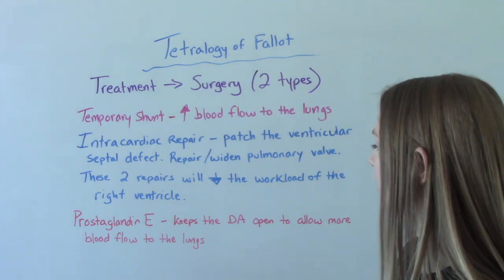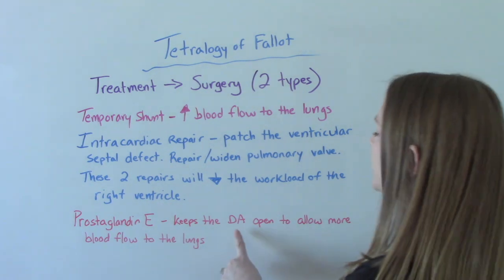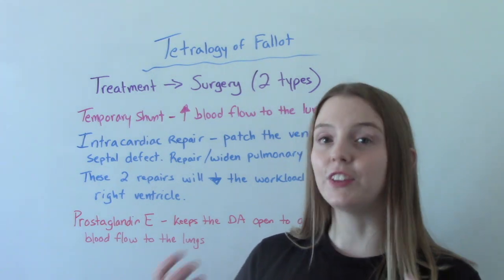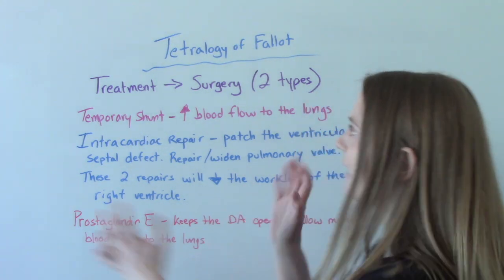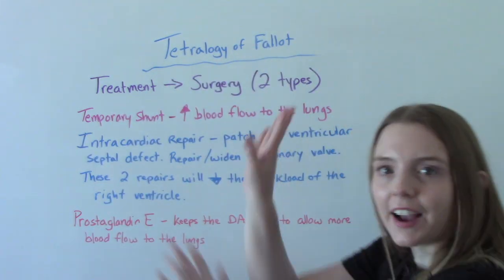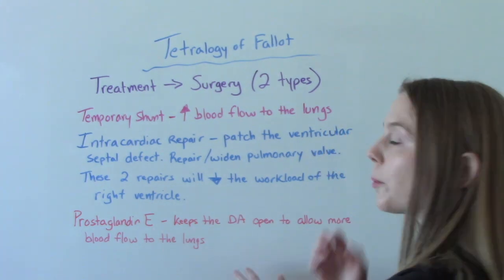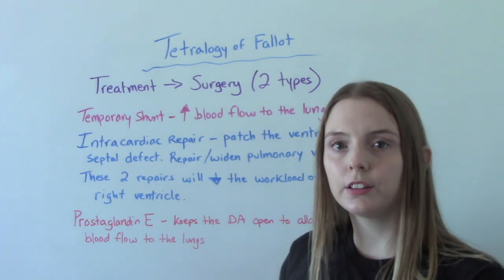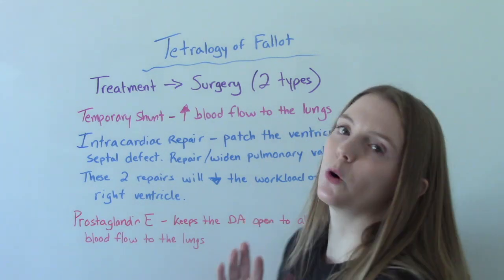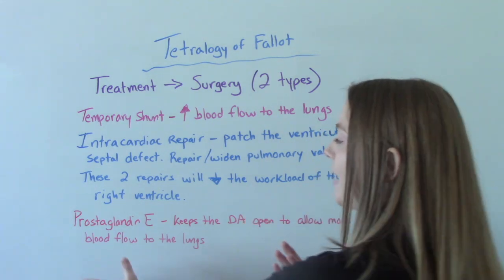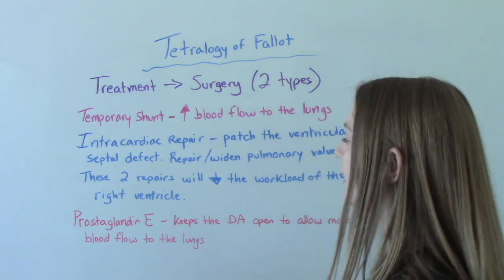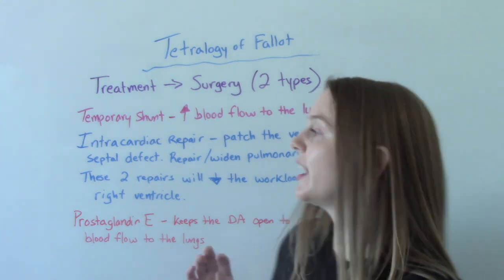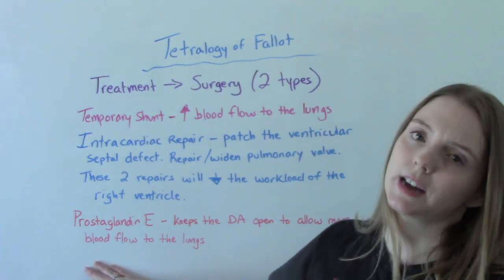The ductus arteriosus is a normal part of fetal heart anatomy — it is not a defect, it normally closes soon after birth. But in this case they want to keep it open, to have a little bit of fetal circulation going so that we get more blood flow to the lungs. This would also be a temporary measure.